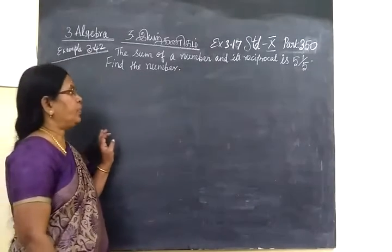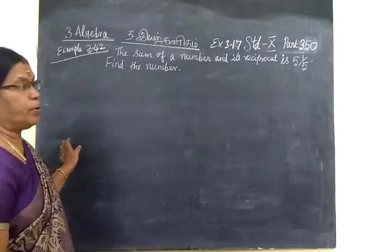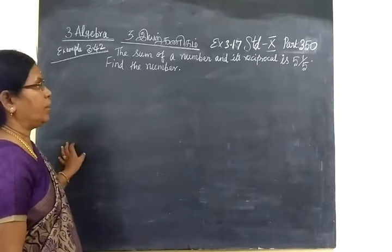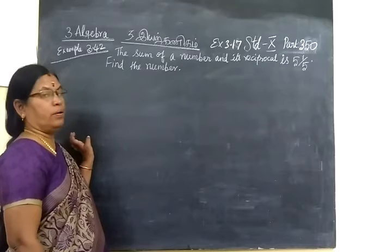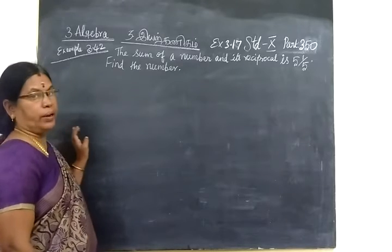Now we see part 350, Example 3.42. The sum of a number and its reciprocal is 5 1/5. Find that number.